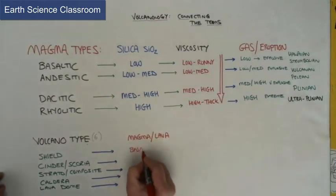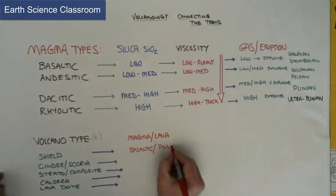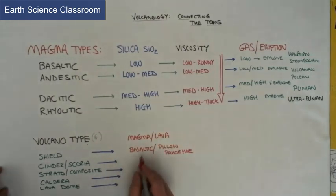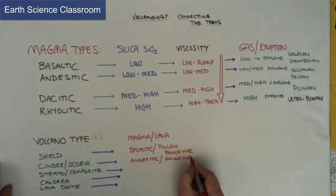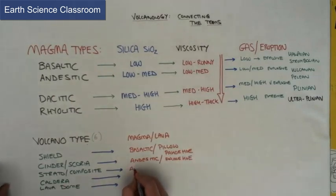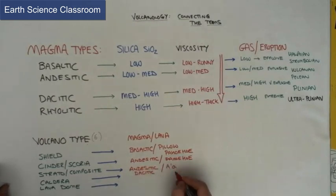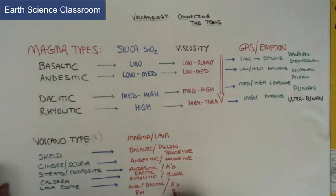We're connecting the magma and lava types of these different types of volcanoes. We know that the magma is going to create the volcano and the shape or edifice of that volcano. Looking at shield being made by basaltic or pillow or pahoehoe lava, looking at andesitic and pahoehoe making cinder and scoria which is mostly the ash small volcanoes, and the stratos, the classic. 75% of all volcanoes are stratos or composites made out of the andesitic or dacitic magma and then the a'a and blocky lava.